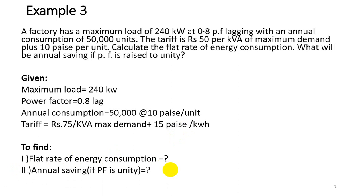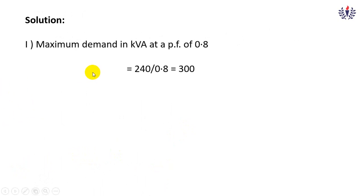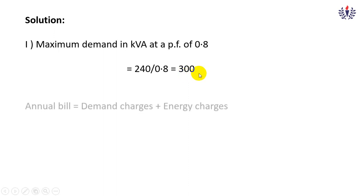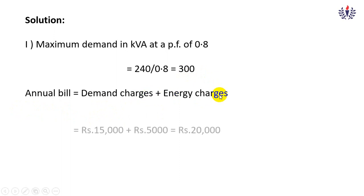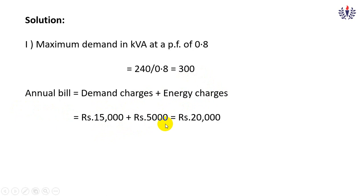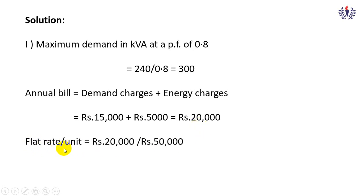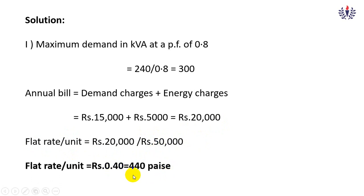Solution: maximum demand in kVA at 0.8 pf = 240 ÷ 0.8 = 300 kVA. Annual bill = demand charges + energy charges = (rupees 50 × 300) + (rupees 0.10 × 50,000) = rupees 15,000 + rupees 5,000 = rupees 20,000. Flat rate per unit = rupees 20,000 ÷ 50,000 units = rupees 0.40, that is 40 pies per unit.